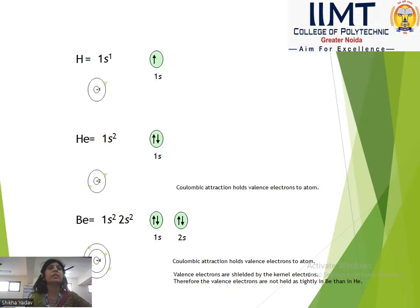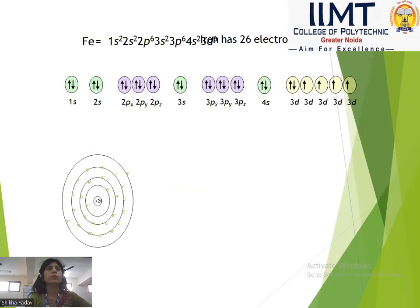From the orbital diagram: hydrogen 1s¹, helium 1s², beryllium 1s², 2s². Now, iron has atomic number 26. We write its electronic configuration as: 1s², 2s², 2p⁶, 3s², 3p⁶, 4s², 3d⁶.